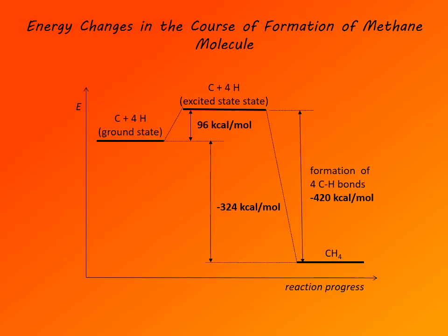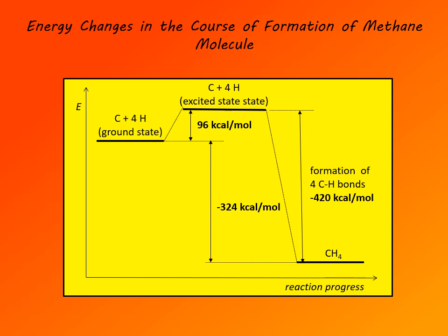Here is a very important diagram showing energy changes in the course of formation of a molecule of methane. On the left, we have a carbon atom and four hydrogen atoms, all in the ground state. Carbon must be in an excited state to form bonds. Promotion of an electron in carbon from the ground state to the excited state requires 96 kilocalories per mole.